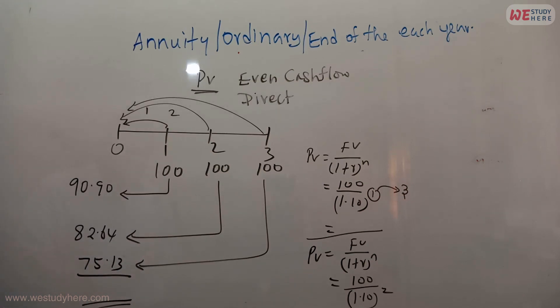We add these all three values: it's equal to 248.67. This is even cash flow direct method. Even cash flow direct method, how much? 248.67.